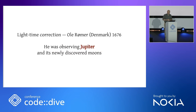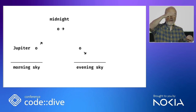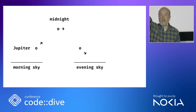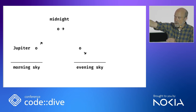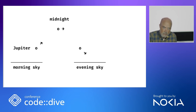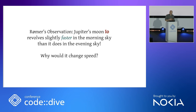The light time correction was discovered by Ole Romer in Denmark. He was observing Jupiter and its newly discovered moons, which had first been sighted just earlier that century. Every 13 months or so, Jupiter emerges from behind the sun up into the morning sky — at first dim, it gets brighter and brighter over the months as it climbs away from the sun until finally it is high and bright in the midnight sky. Then through another six months it slowly appears lower and lower toward the sunset until it disappears again into the glare of the sun. Ole Romer watched this and watched Jupiter's moons. His observation was that Jupiter's fastest little moon, Io, revolves slightly faster in the morning sky than it does in the evening sky.